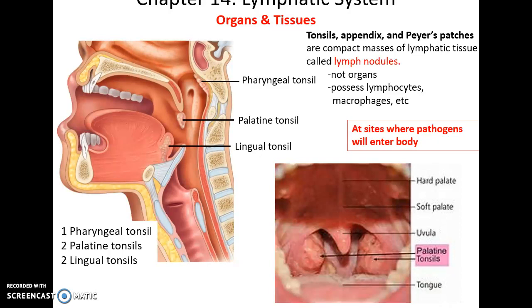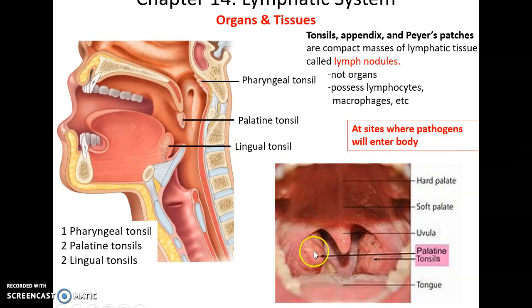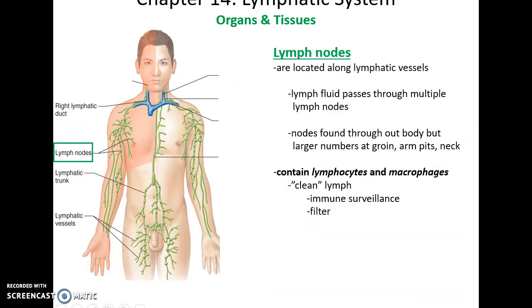The tonsils include the one single pharyngeal tonsil in the upper back of the pharynx, the two right and left palatine tonsils, and the two lingual tonsils. These are lymph nodules, and many pathogens can enter the body through our nasal cavity or oral cavity. The palatine tonsils can become inflamed when they are fighting a pathogen.